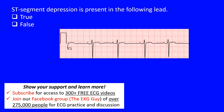Here we have a true or false question, and it states the ST segment depression is present in the following lead. We have lead V1 here, and remember this is a right precordial lead. We're asking: is ST segment depression present or not?